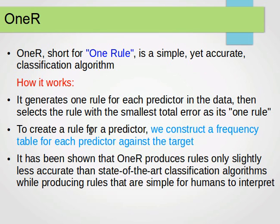To create a rule for a predictor, we construct a frequency table from each predictor against the target. If that predictor is numerical, we need to transform it into categorical and then build a frequency table. It has been shown that 1R produces rules only slightly less accurate than state-of-the-art classification algorithms while producing rules that are simple for humans to interpret.